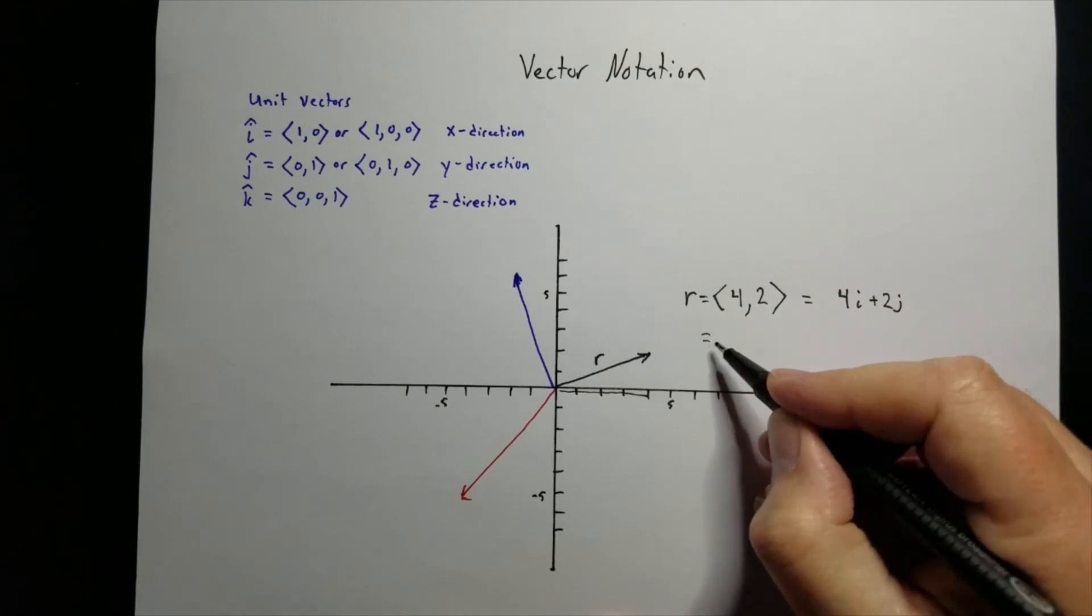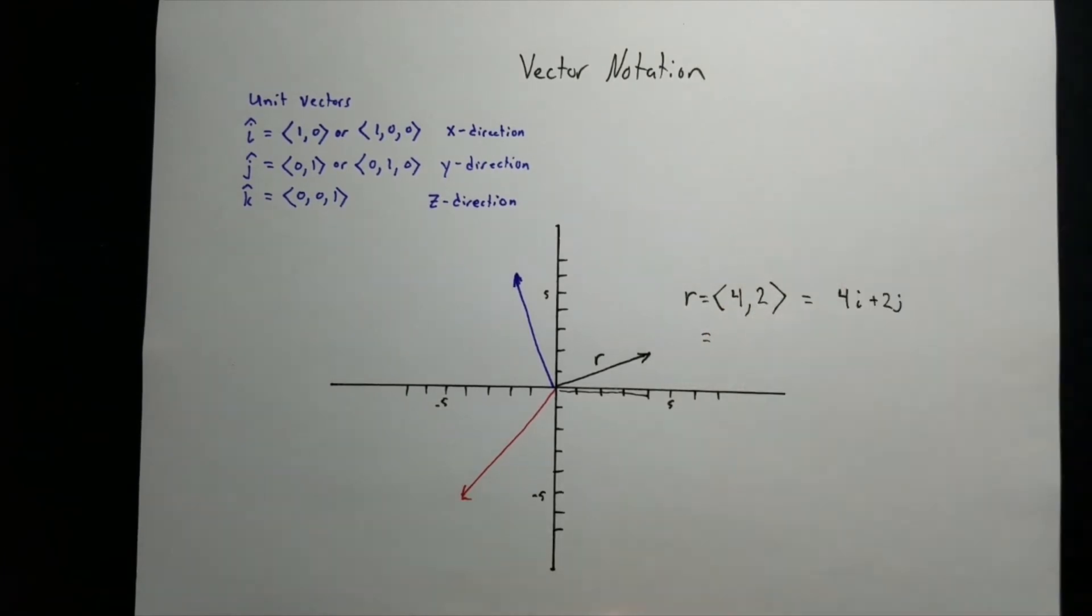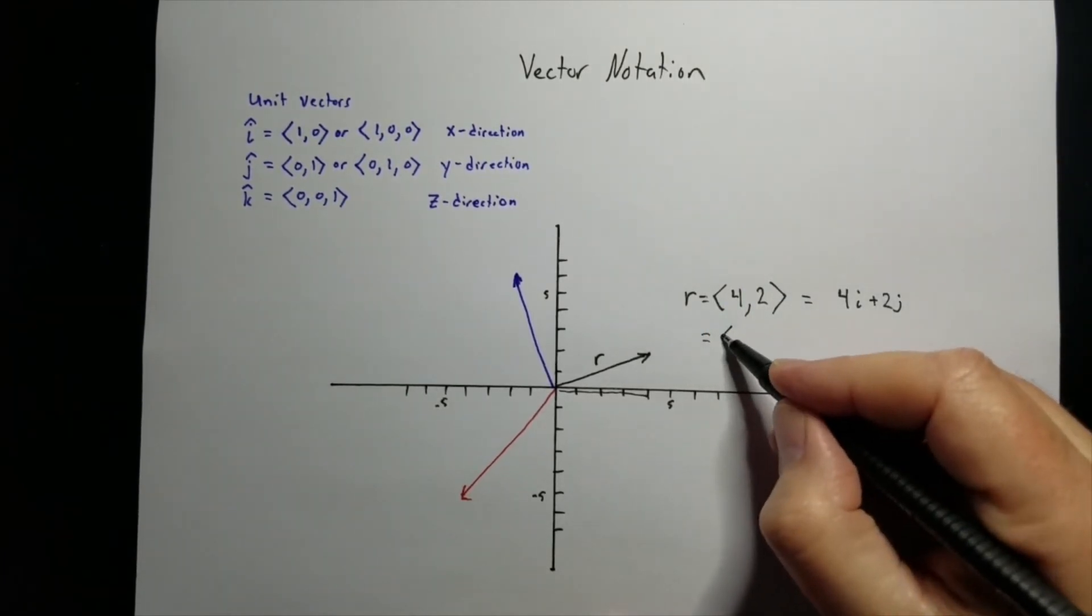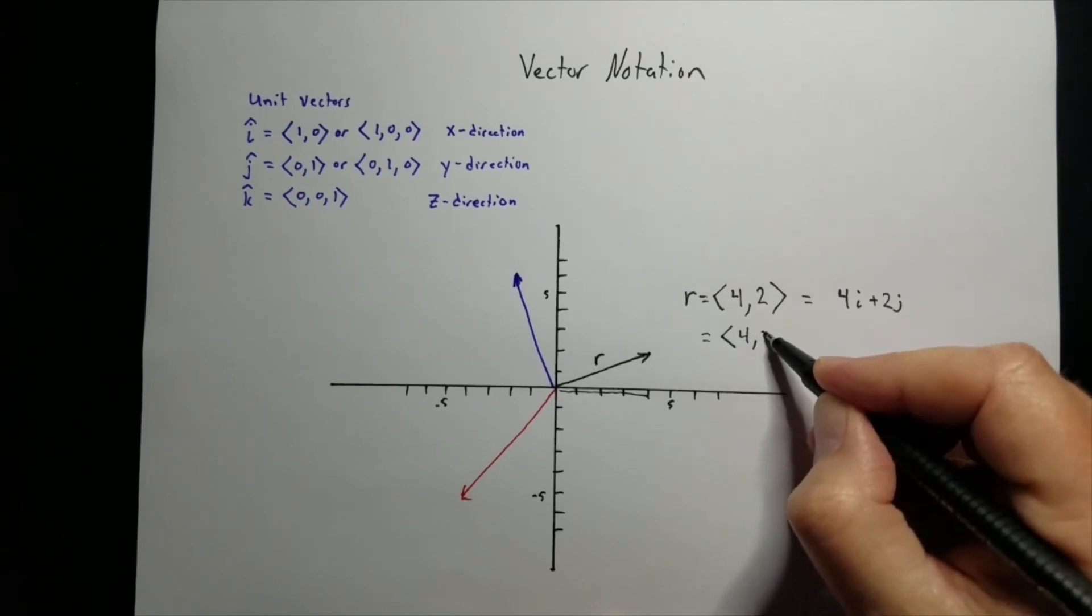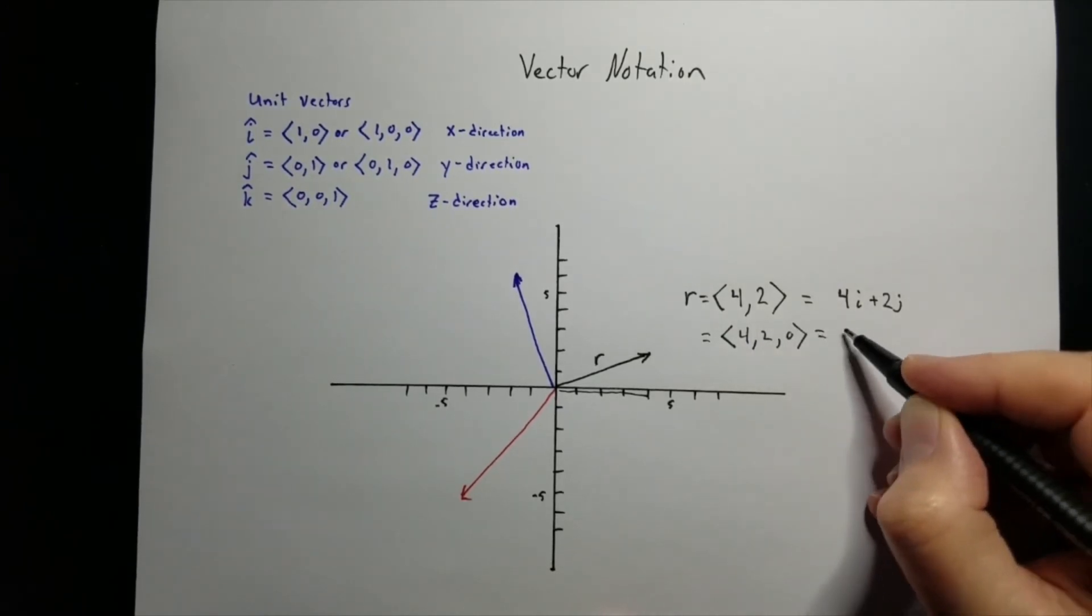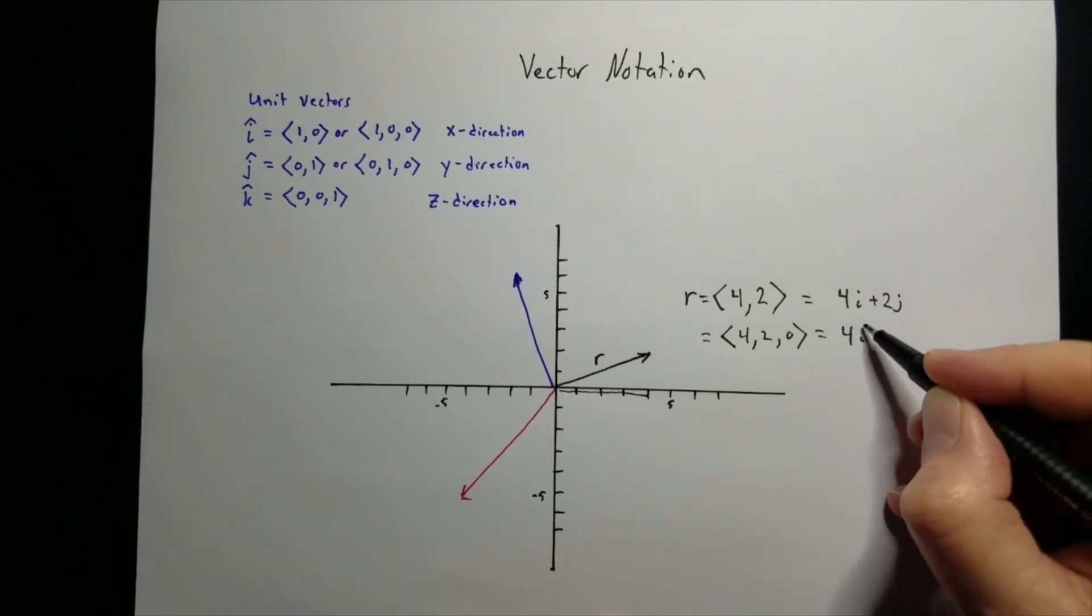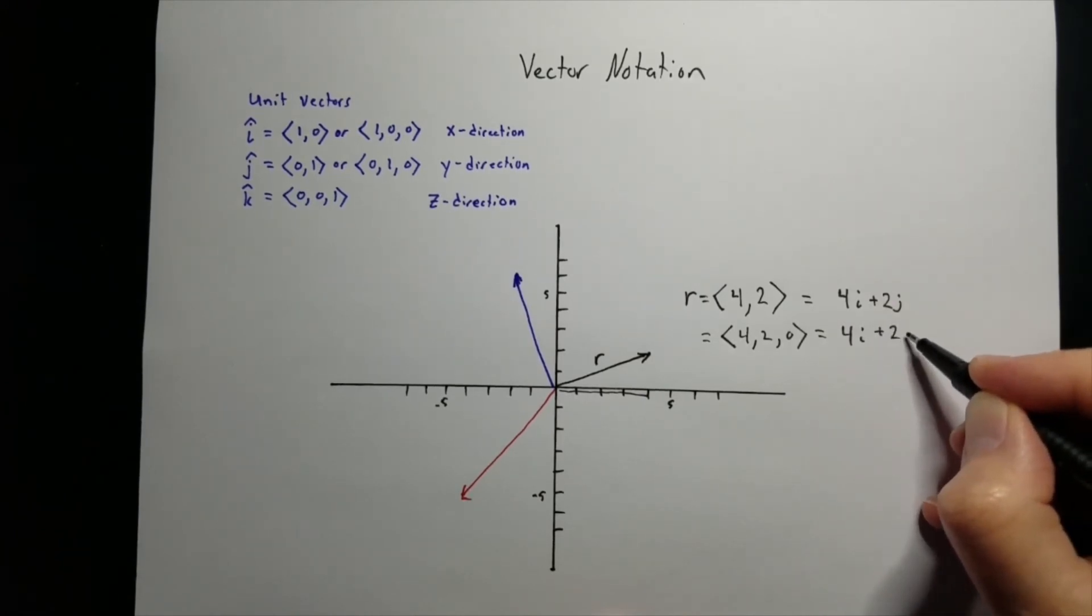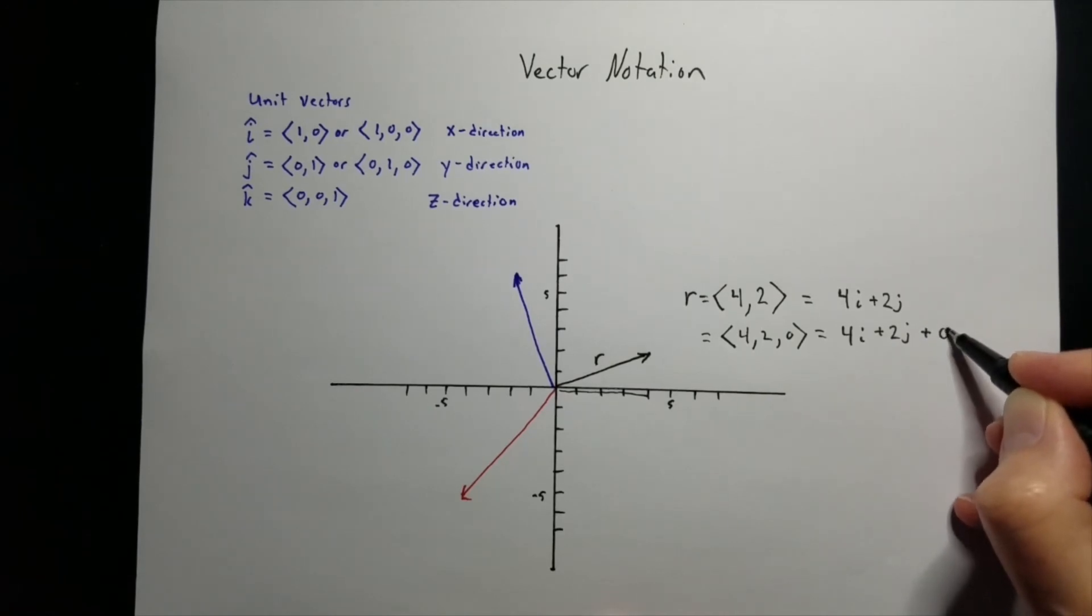Or 4i plus 2j. Now, if we want to talk about the k going up and down, it would simply be written as 4, 2, 0. Or 4i plus 2j.